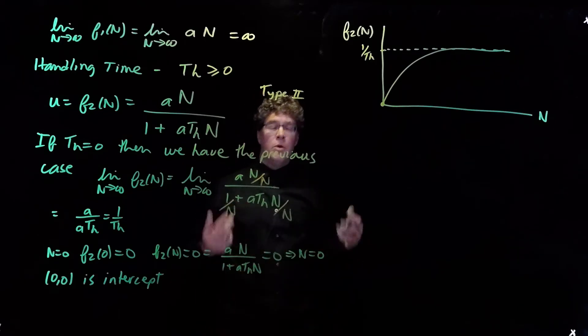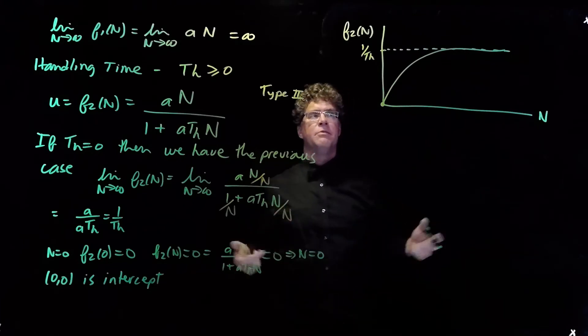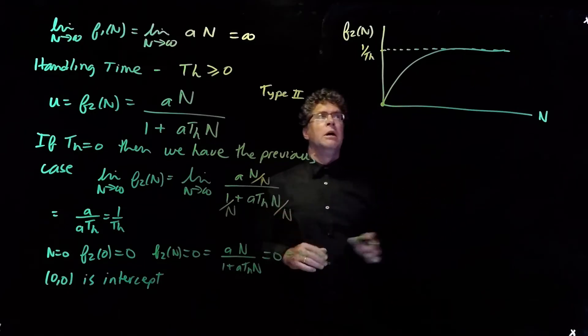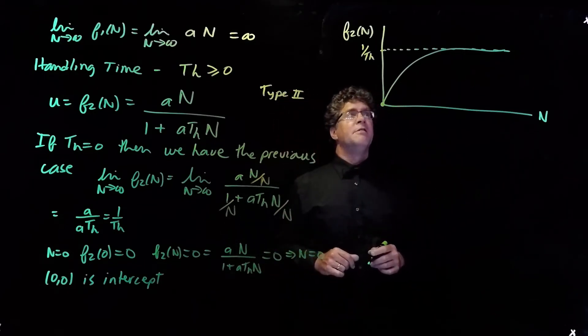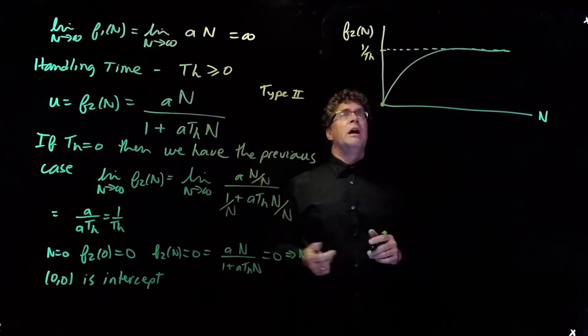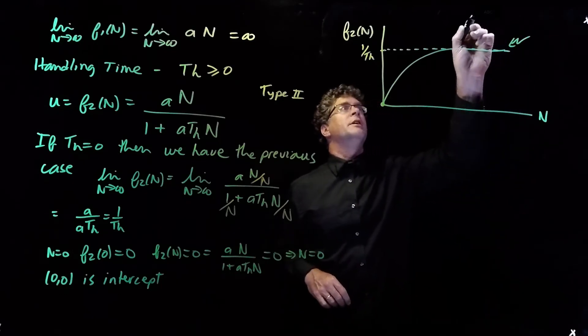And it looks something like this. So, when we learn more about graphing functions, and we've worked on the derivative and the second derivative and curve sketching, we'll learn how to plot this function. But for now, let's just take the function as given here. And so, as n goes to infinity, we see that we have a horizontal asymptote at 1 over T sub h.